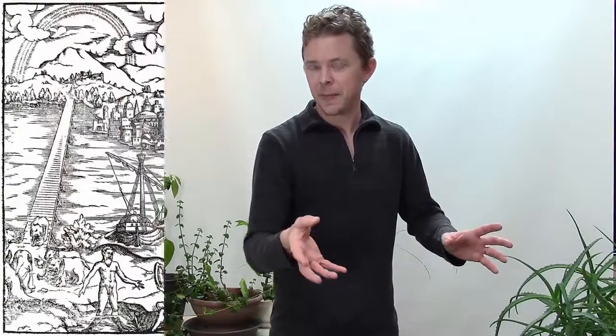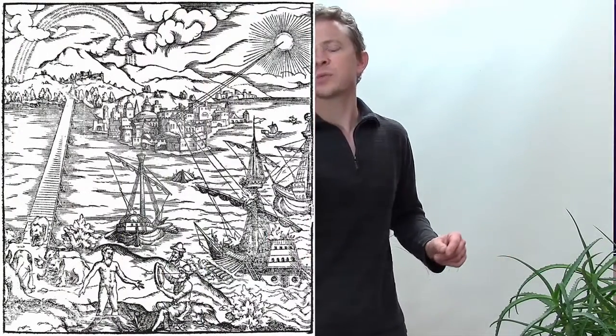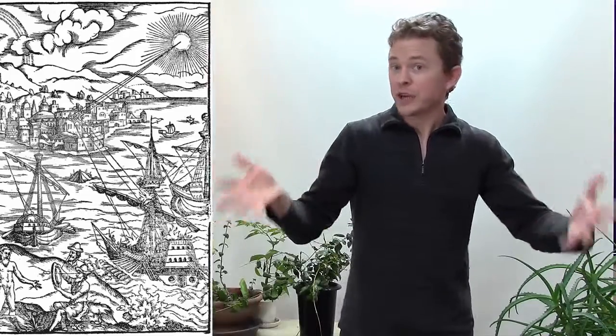Another Archimedean anecdote has him as an old man at the age of 75. Syracuse, until then, had been a Greek city, but now the Romans were invading. During this time, Archimedes was deep in thought on a project, and a soldier came to him and demanded that Archimedes come with the soldier.